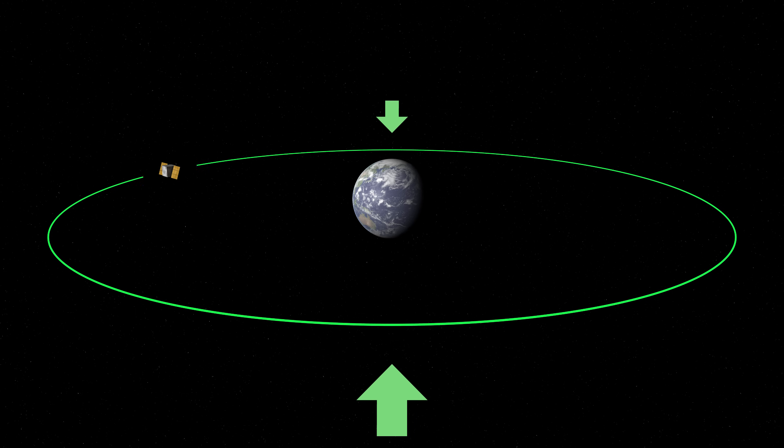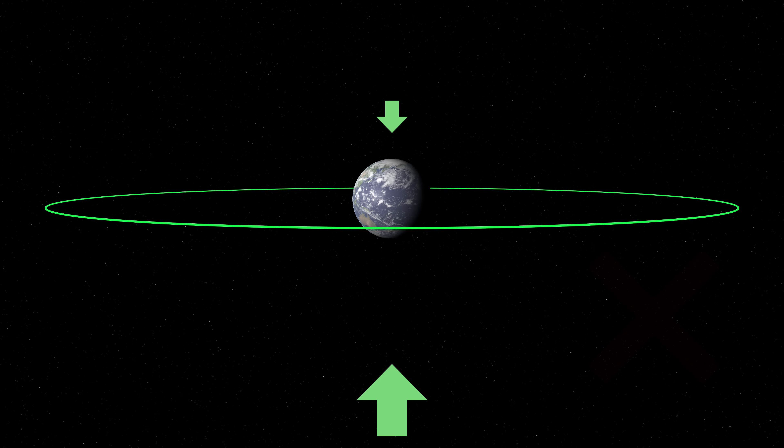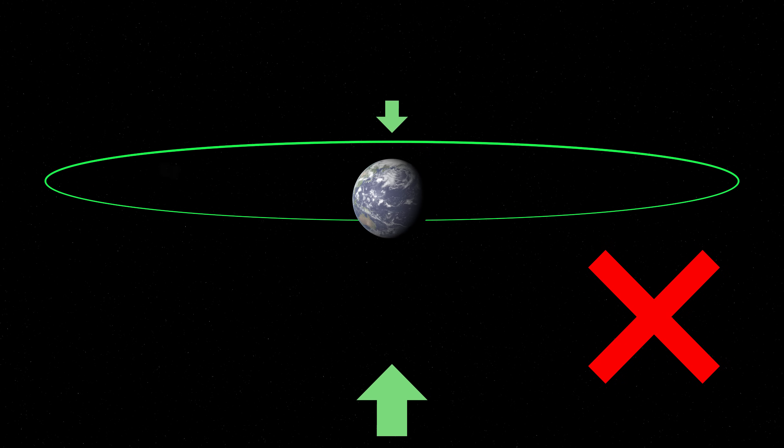If you forget that the satellite is in motion and just imagine that its orbit is a giant hula hoop, you'd expect the orbit to tilt like this, but that's not what actually happens.